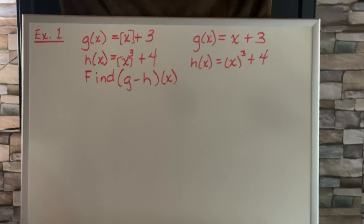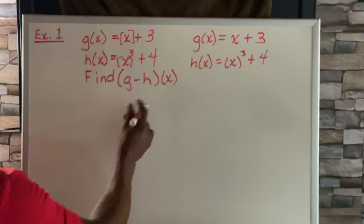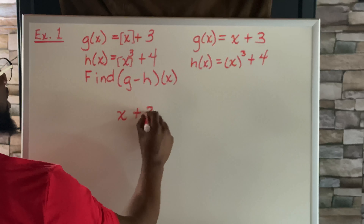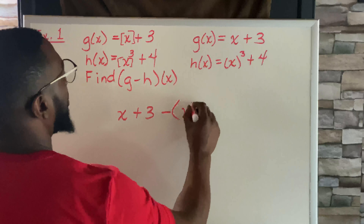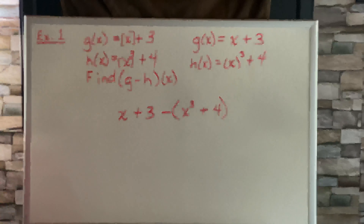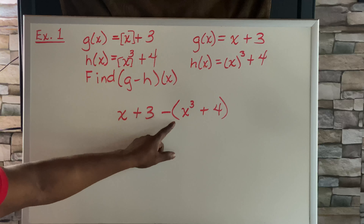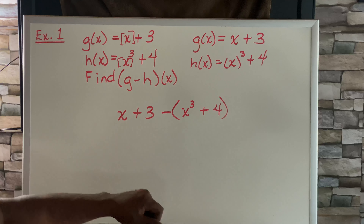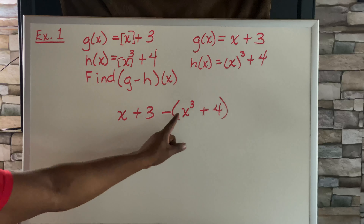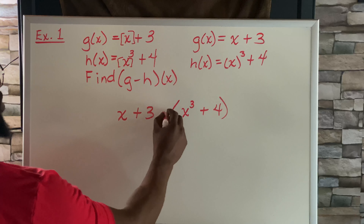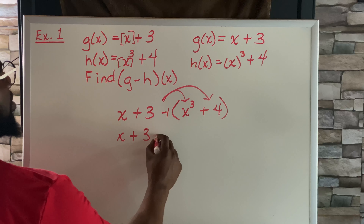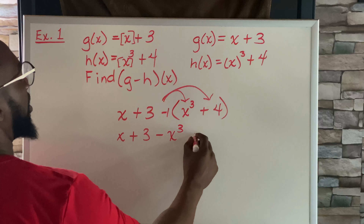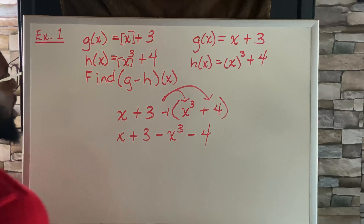It says g minus h. So g is x plus 3, and since we're dealing with minus, we're going to put that second part — that second binomial — in parentheses: x cubed plus 4. Whenever we have a minus outside of parentheses, that means it's really a negative 1 right there, so the sign of these two is going to change — negative 1 times x cubed and negative 1 times 4. That leaves x plus 3 minus x cubed minus 4.